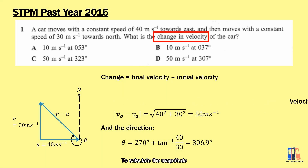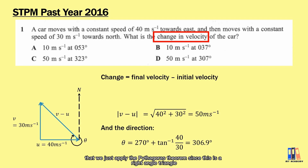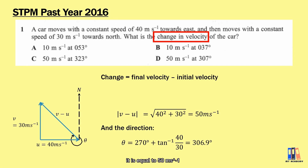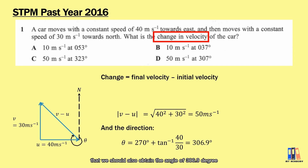To calculate the magnitude, we apply the Pythagorean theorem since this is a right-angle triangle. It is equal to 15 meters per second. For the direction, we apply the bearing, and we should also obtain an angle of 206.9 degrees.